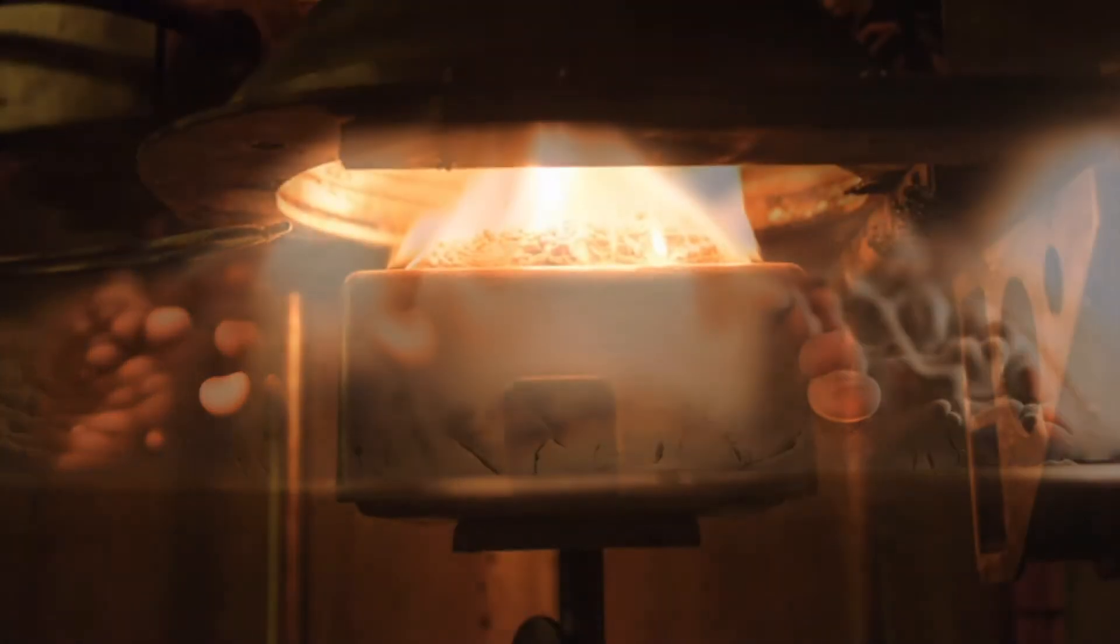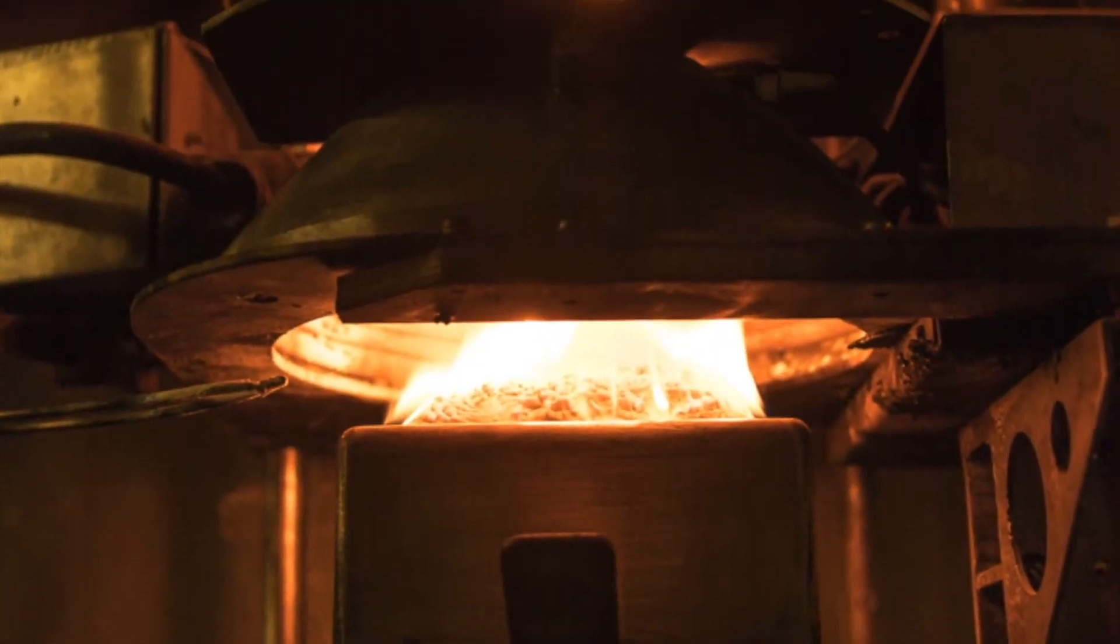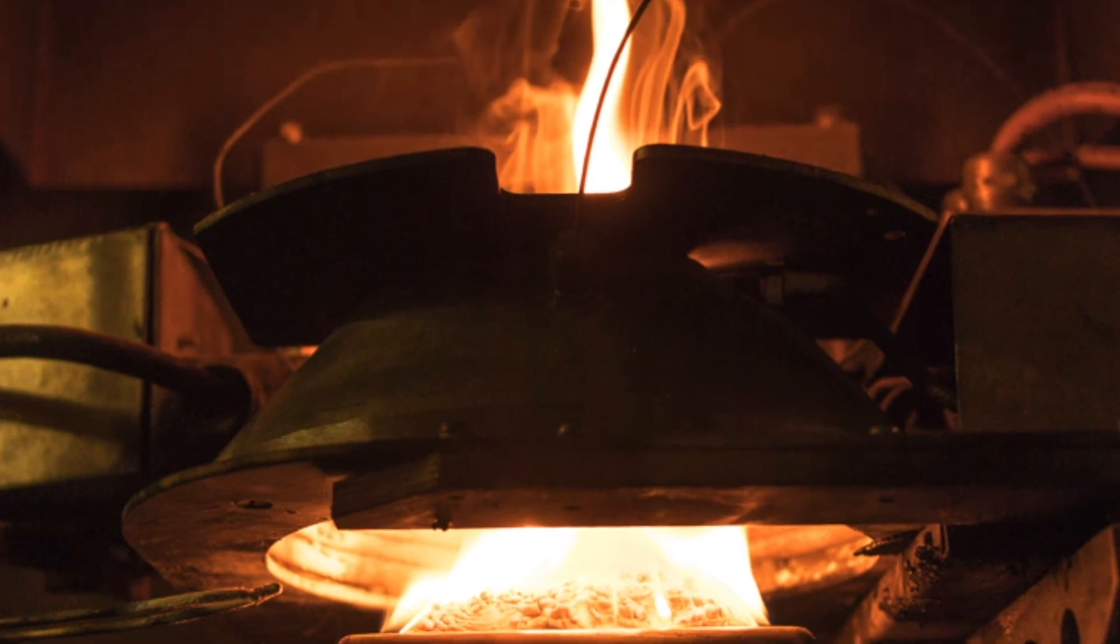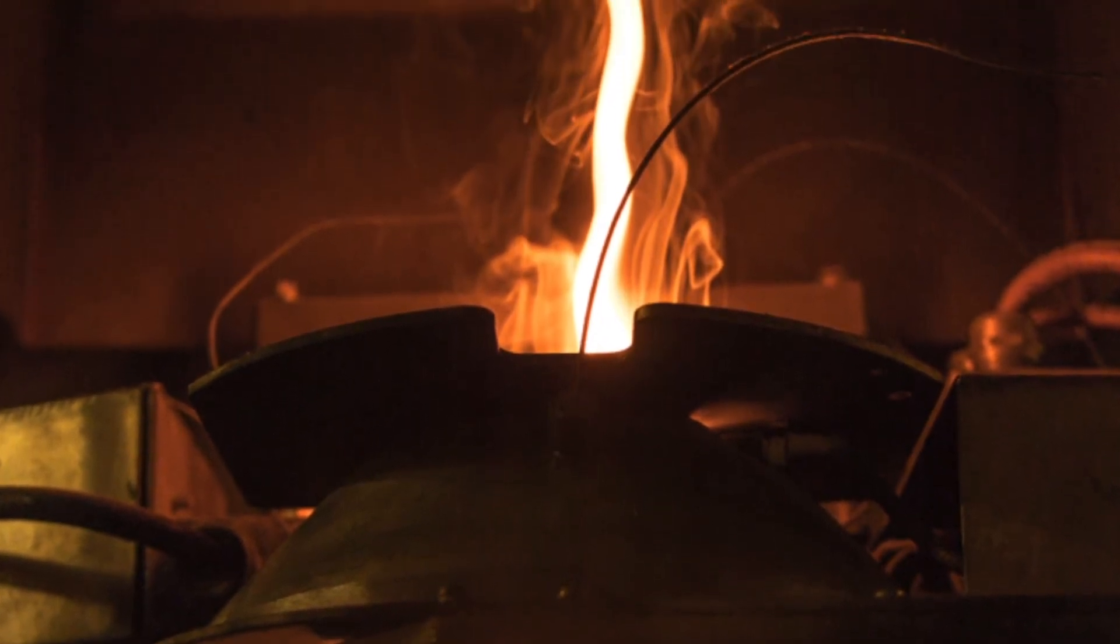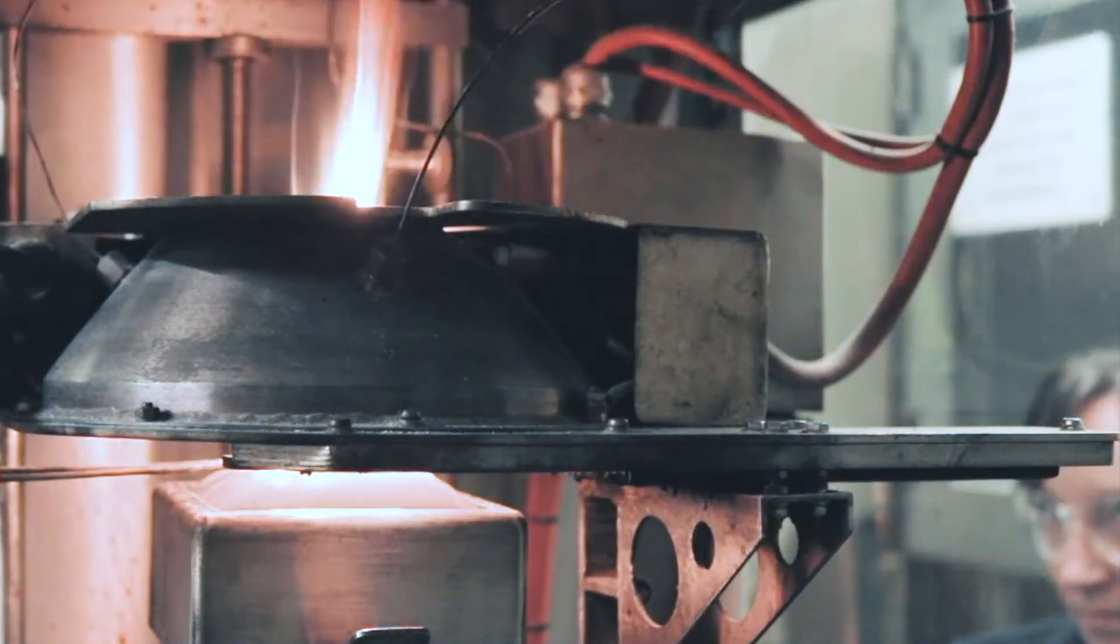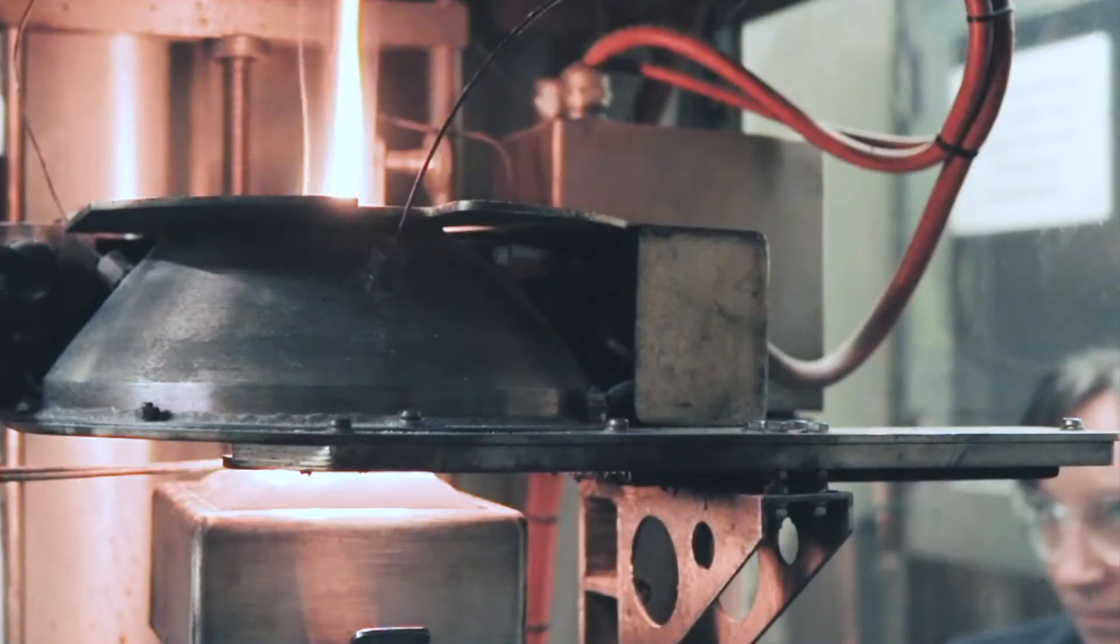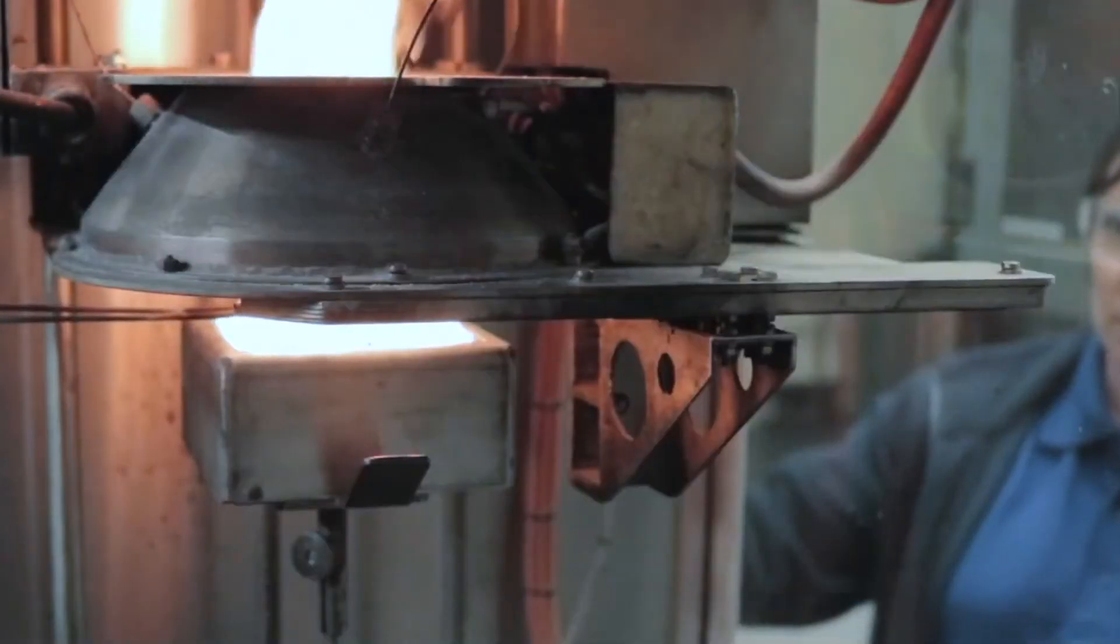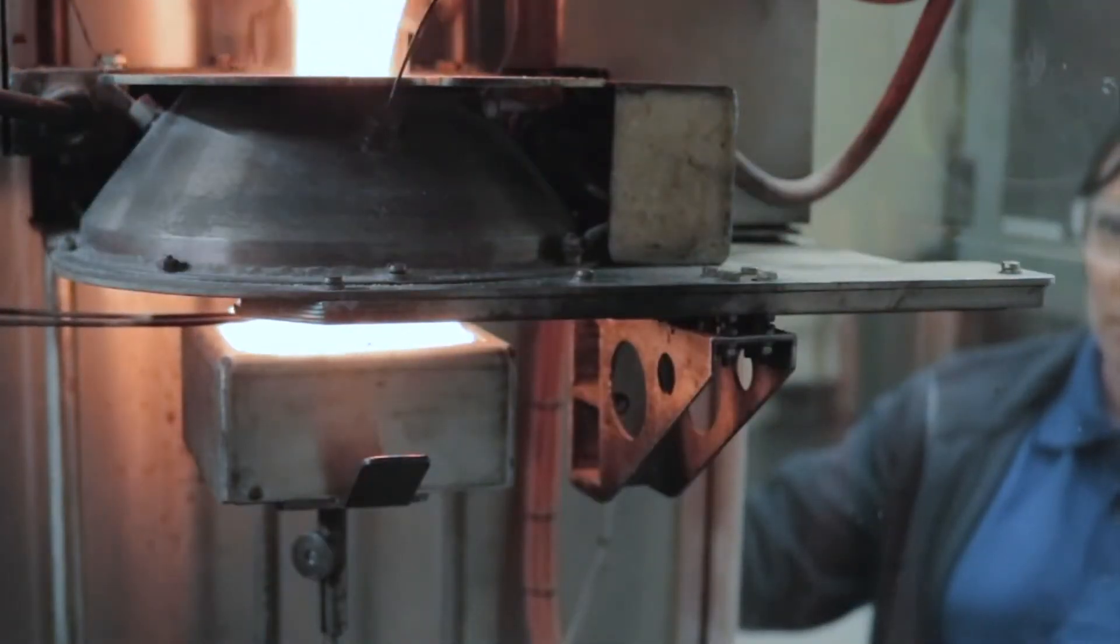Fire tests using the cone calorimeter involve exposing a flat specimen to an incident heat flux generated by the cone-shaped heating element. A spark igniter may be placed midway between the sample and heater and is used to ignite the combustible gases released from the material when the concentration reaches the critical level to sustain flaming.